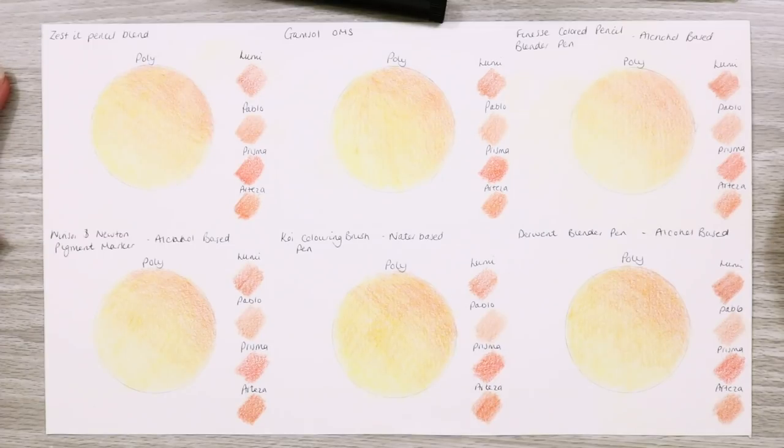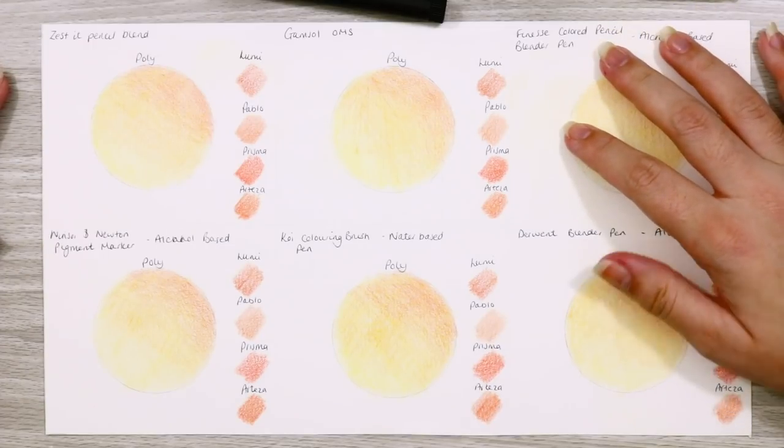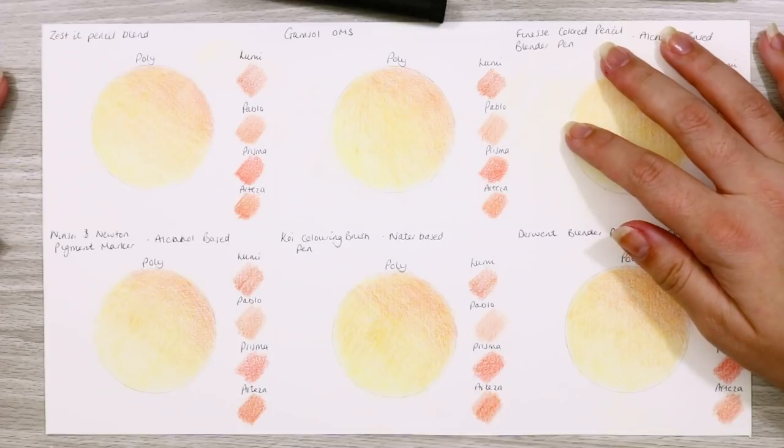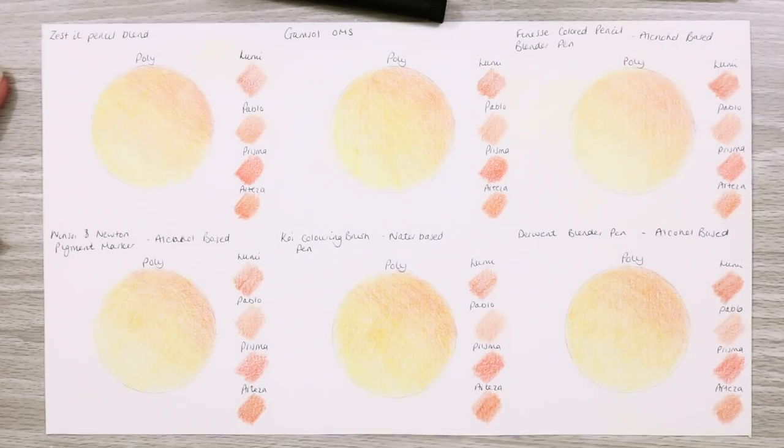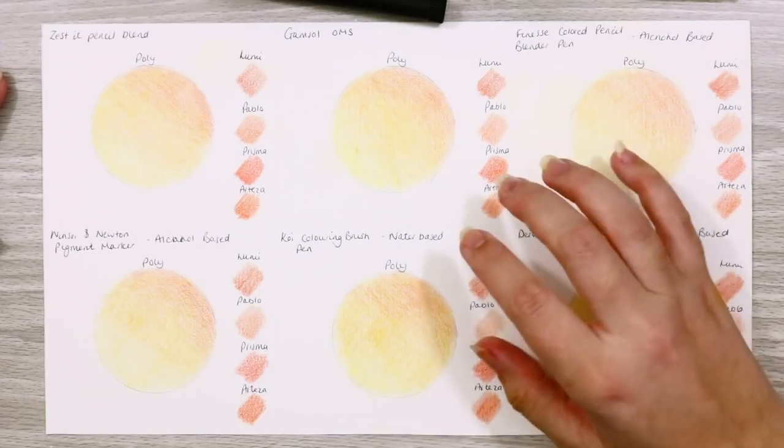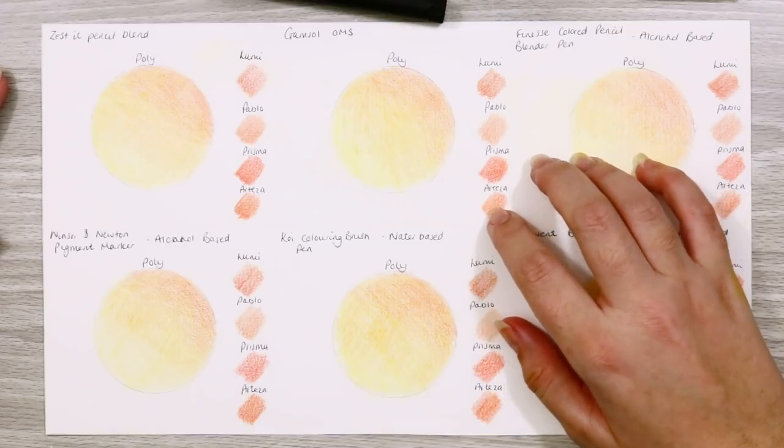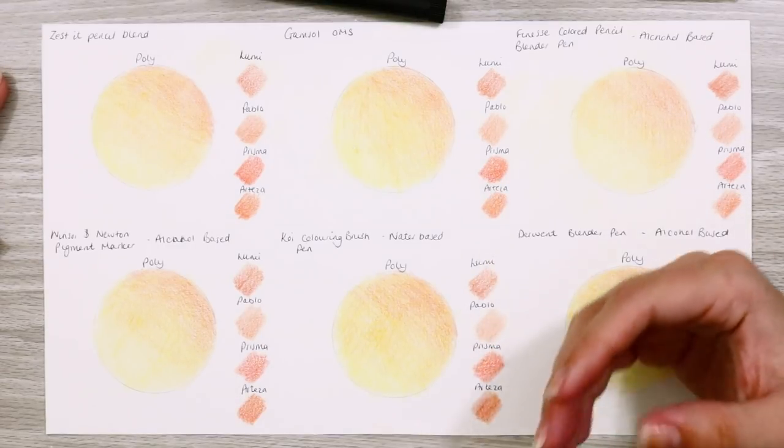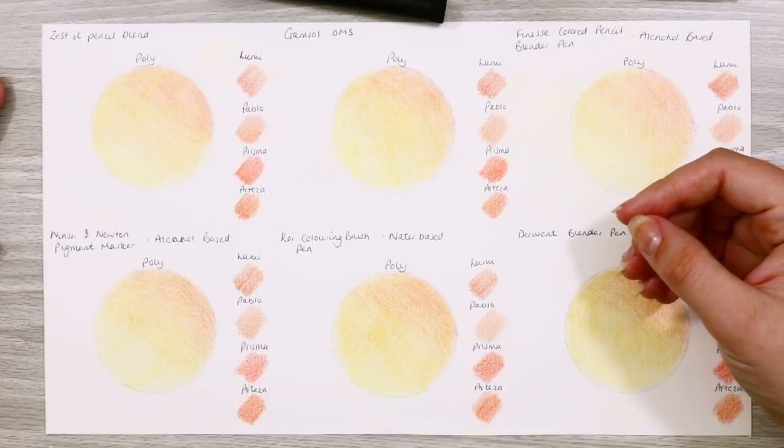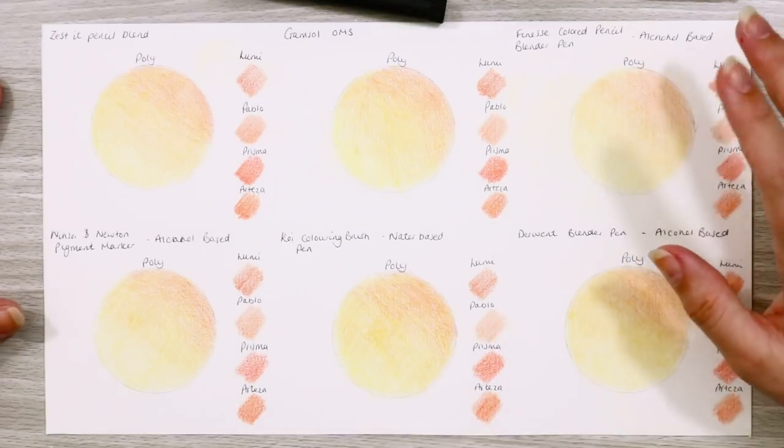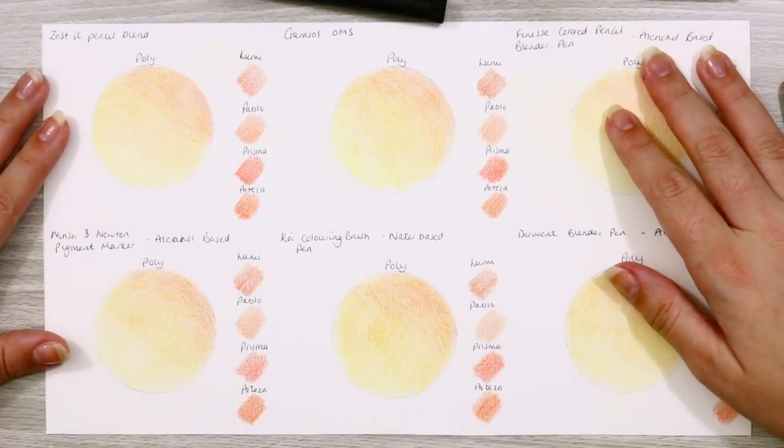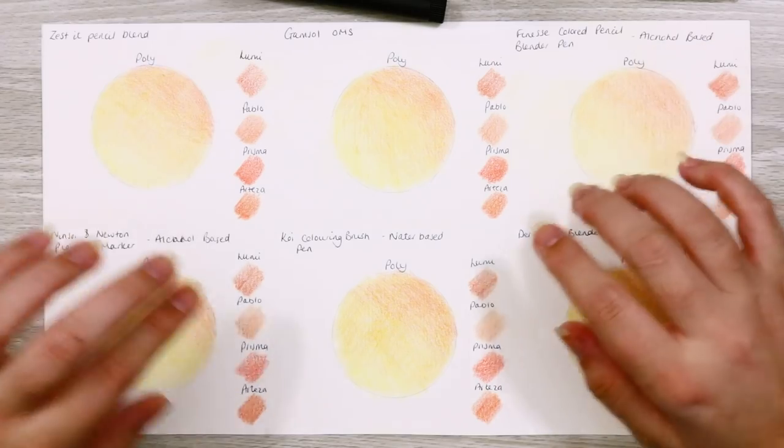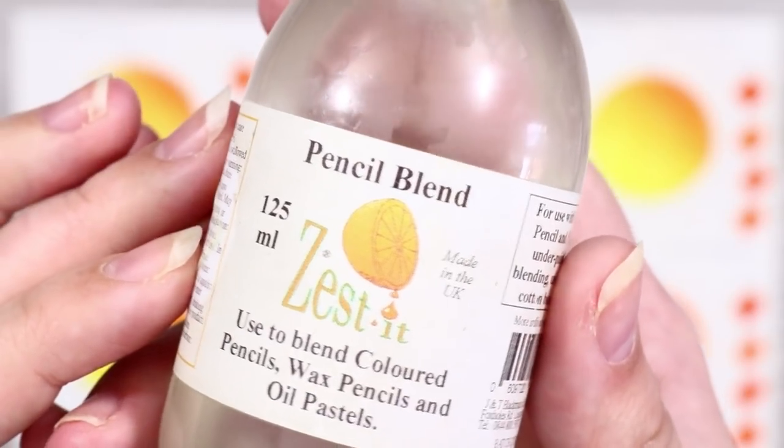I also add little swatches of my other pencils to the side. These all happen to be wax based pencils so I can see the effect of each product on those as well. Those little swatches are Caran d'Ache Luminance, Pablo, Prismacolor, and Arteza Expert pencils. You don't have to have tiny swatches off to the side either, you can create many different sheets for each kind of pencil so you can really accurately compare each of your results.